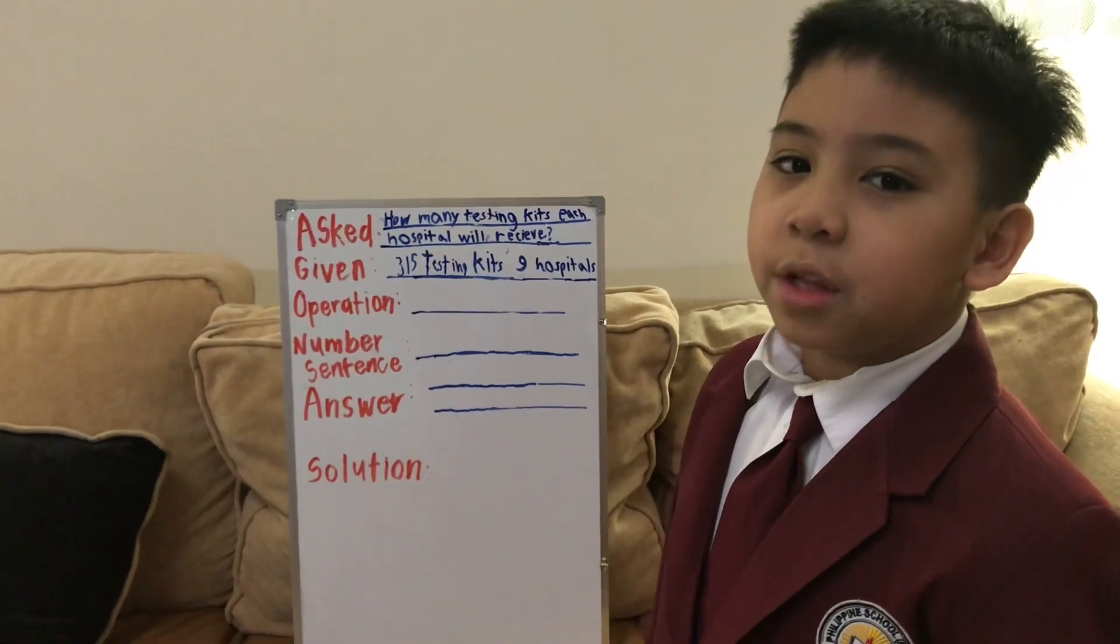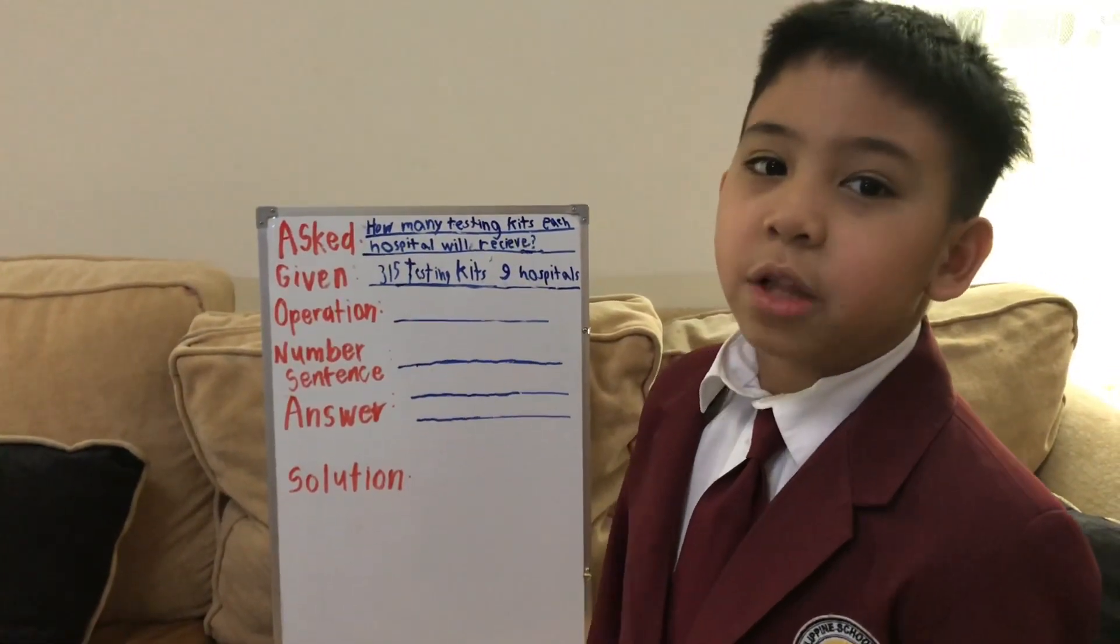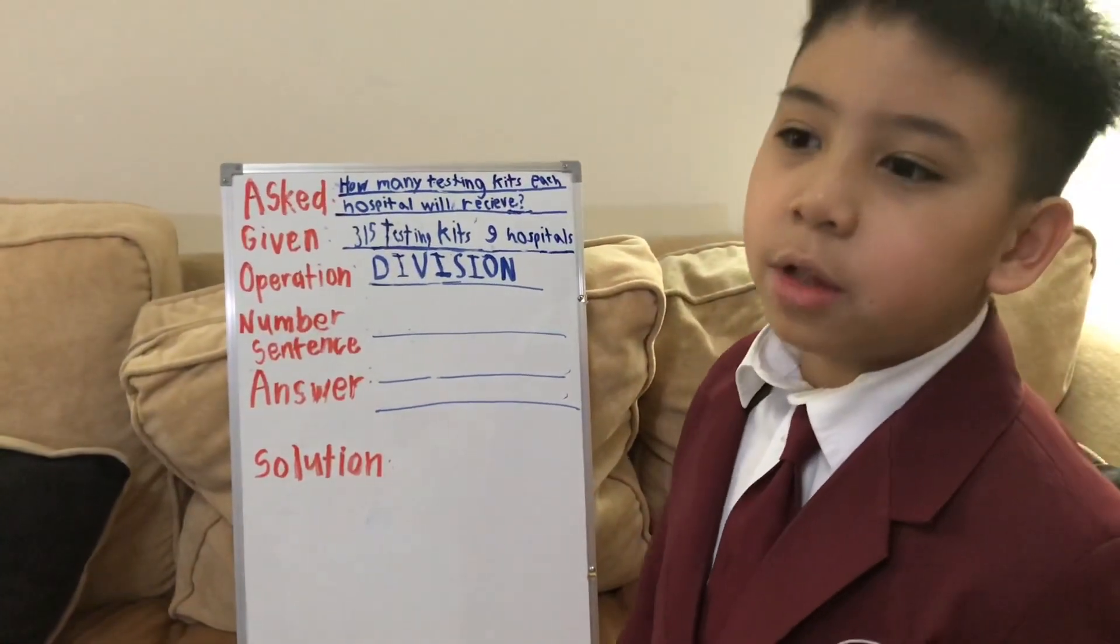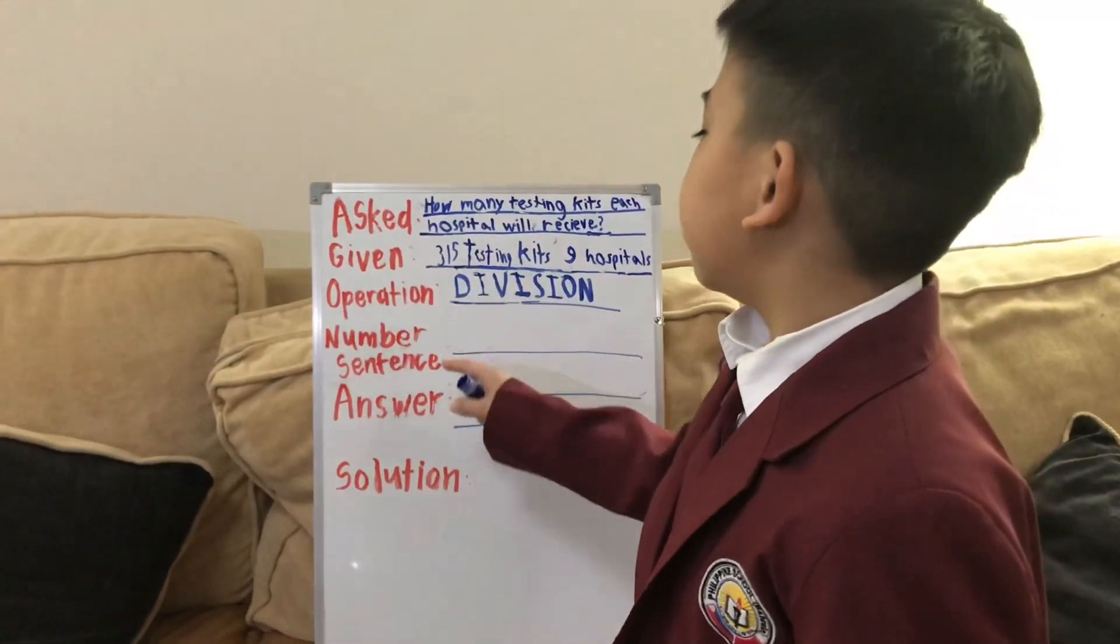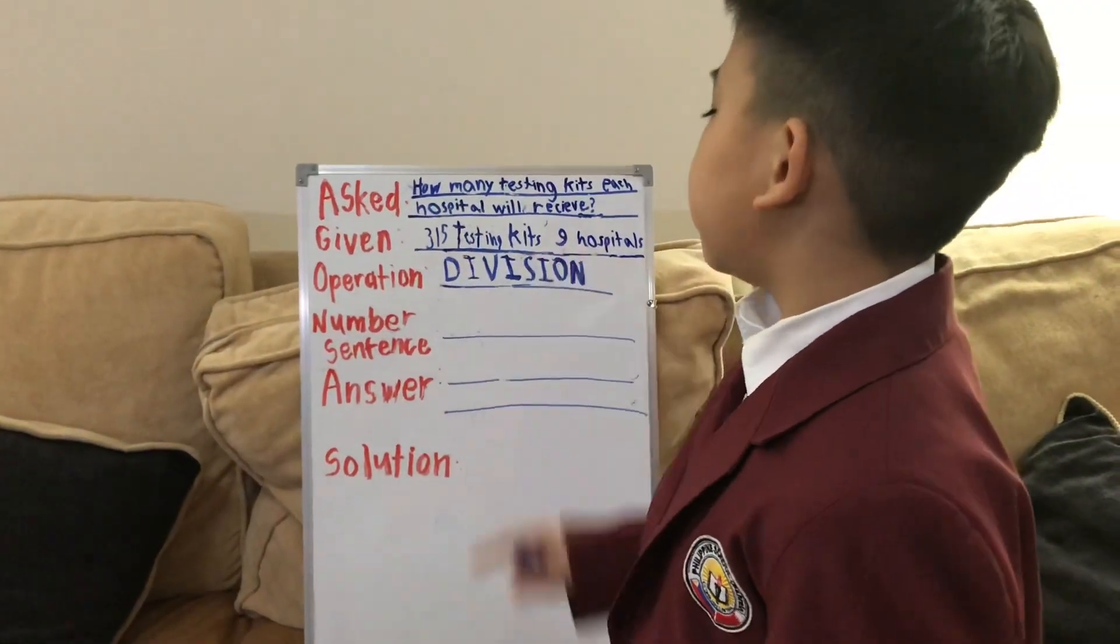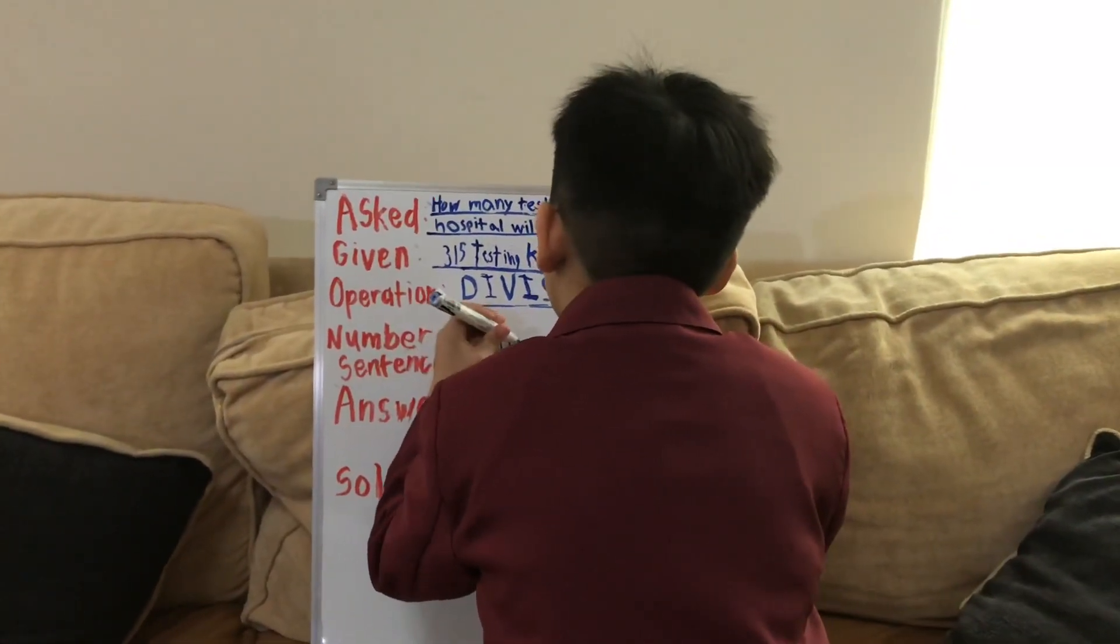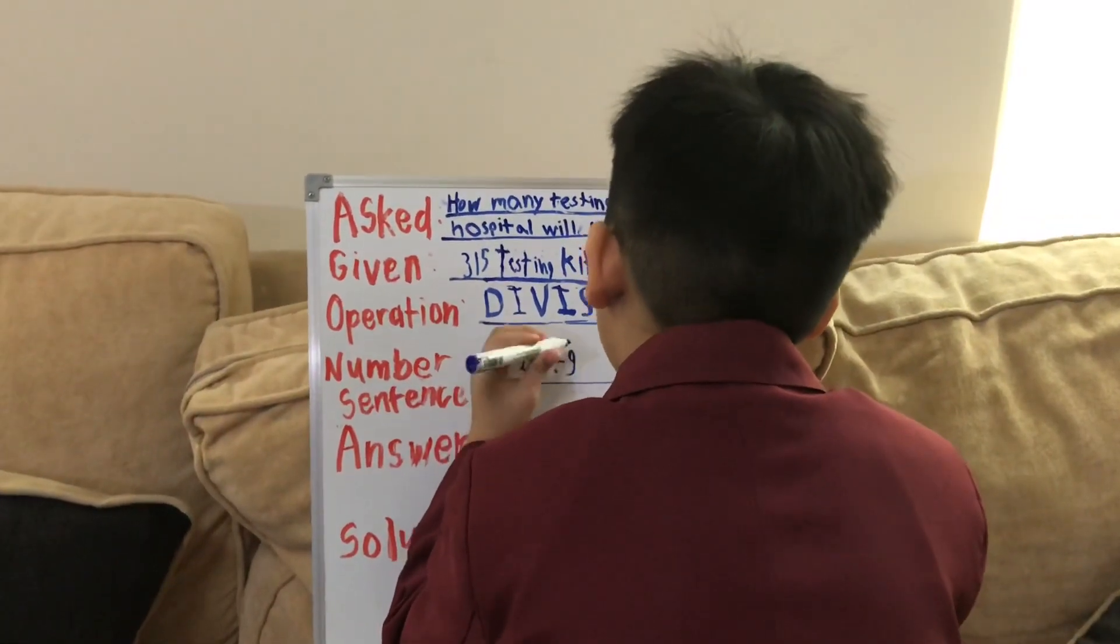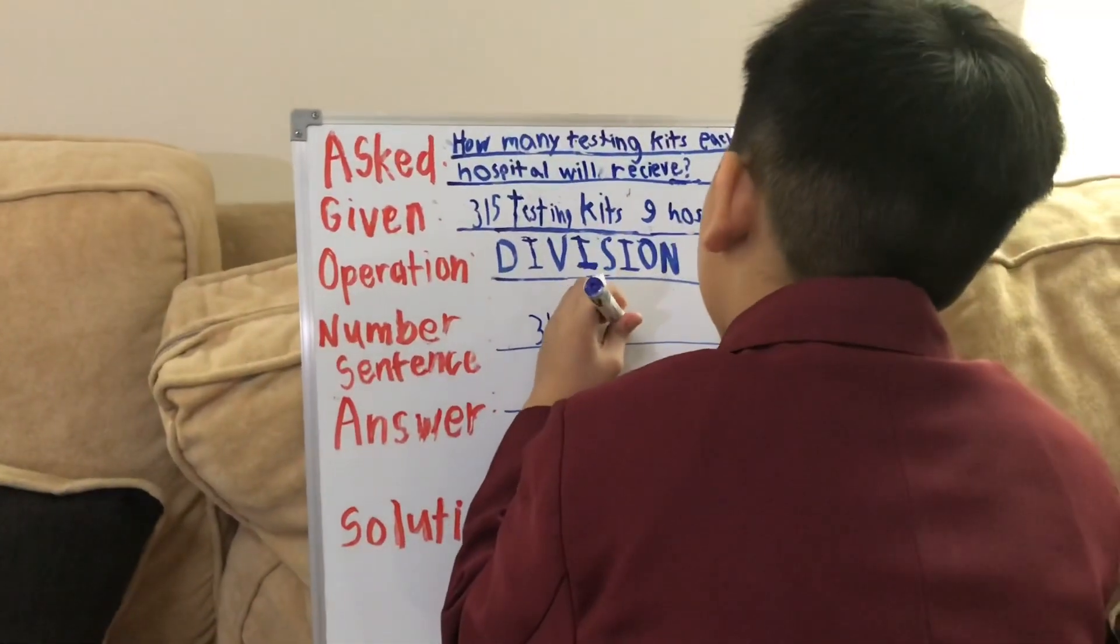And now we're going to proceed to the operation. What's the operation? As you already know, it's division. And now, let's proceed to number sentence. The number sentence are already at the given. 315 and 9 hospitals. Let's do it. 315 divided by 9. And then always at the end, always put n.